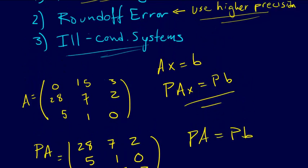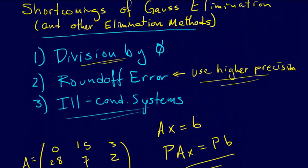Of course, that addresses some of these problems in particular. It mostly addresses the division by zero issue, but it also helps in other cases because it can help make the method less prone to round-off error as well, even if it doesn't help the condition number in general. So that's pivoting.